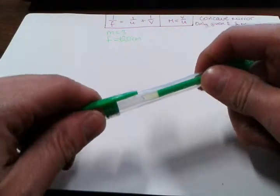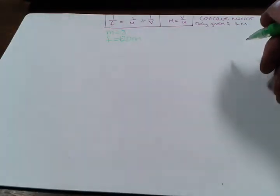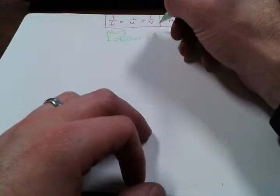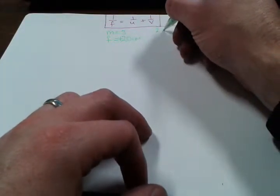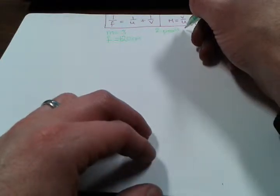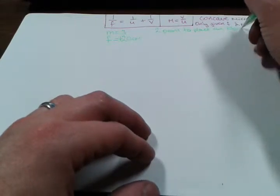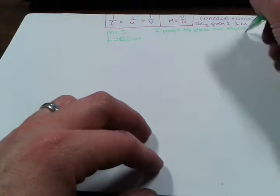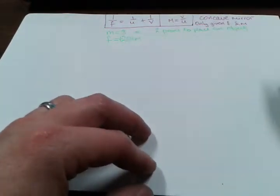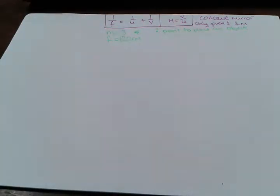So it's a concave mirror, we've got a positive focal length, and we've got a magnification of 3. In this question, it suggests that there are two positions where we can place an object and get this magnification — where we'll get M equals 3. So we're asked to find the object distance in both cases and then the image distance in both cases.